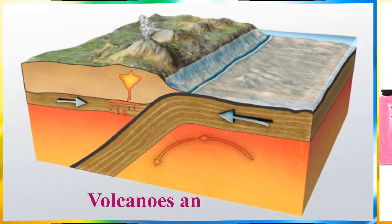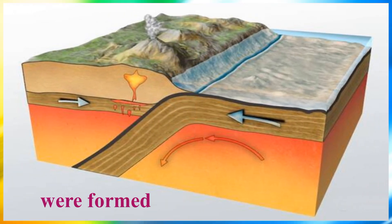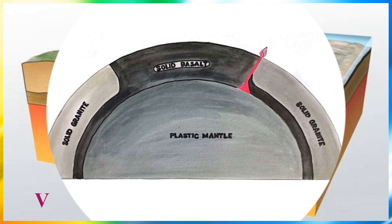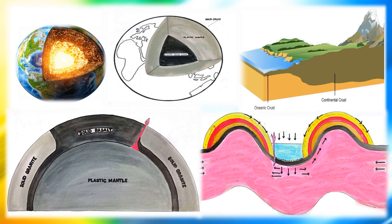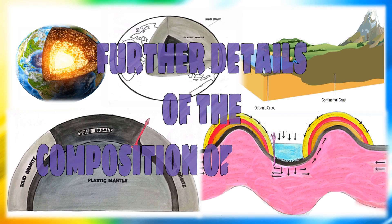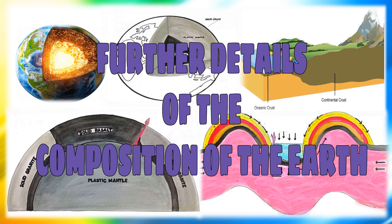Volcanoes and mountains were formed through earthquakes. Volcanoes erupt when steam creates a lot of pressure and is released as lava. That's all about further details of the composition of the earth.